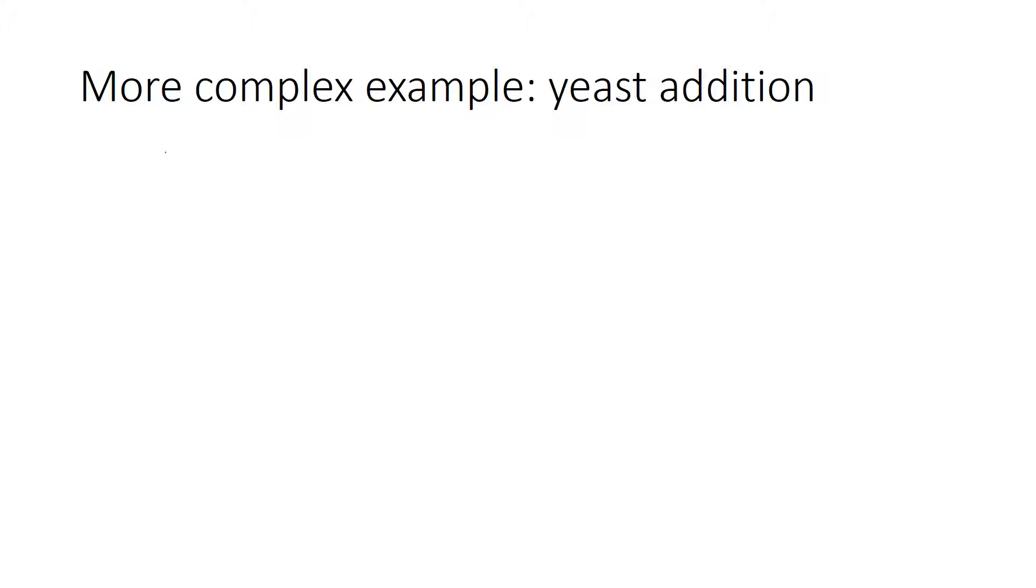So what makes it more complex is we usually quote yeast additions in pounds per gallon. So the typical rate of yeast additions is two pounds per 1,000 gallons.